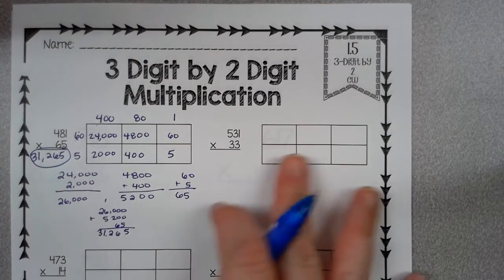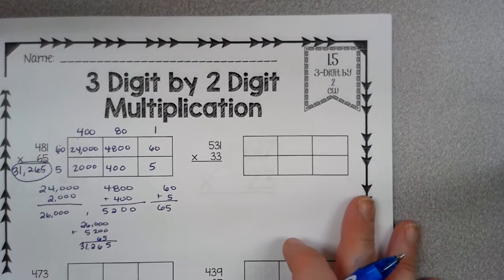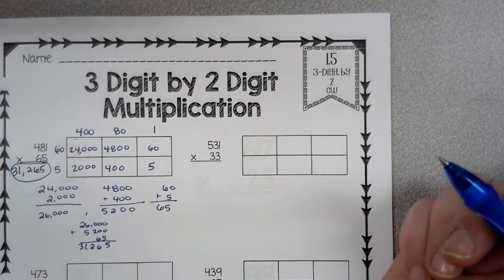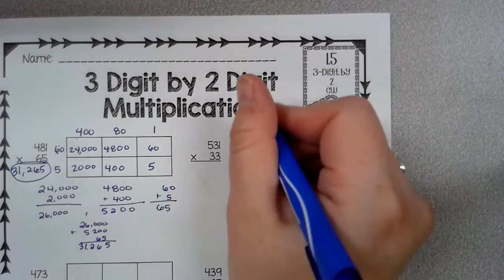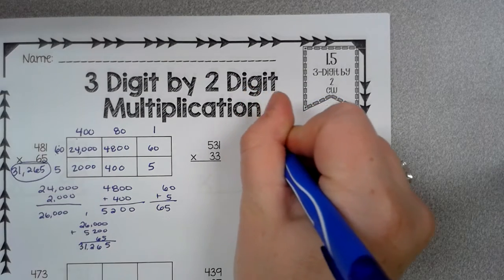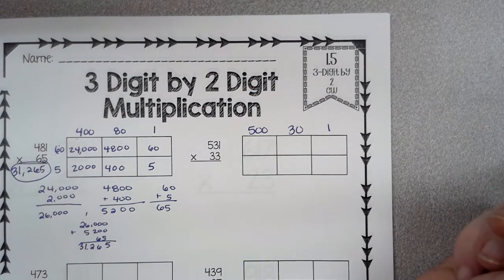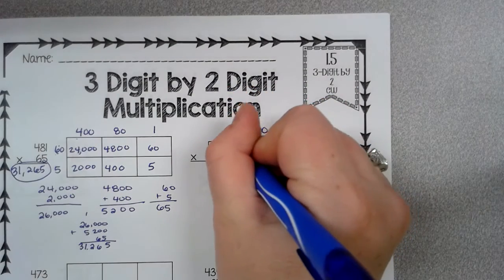And let me show you how I meant to do that because I forgot to line it up. So 531 times 33. So I'm going to decompose the 531. 500, 30, 1. And 33 is 30 and 3.